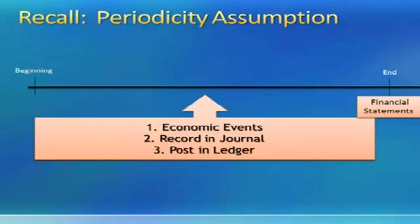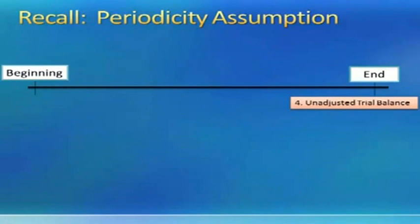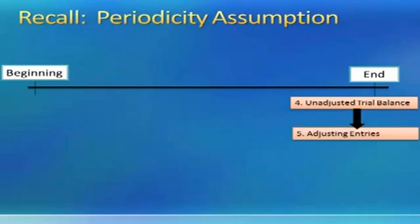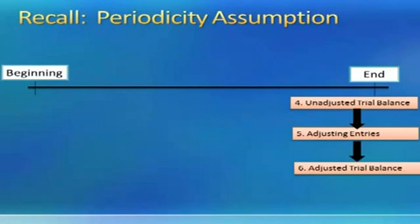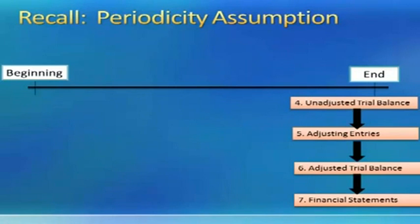At the end of the accounting period, we want to make financial statements. But before we can, there are some things we must do. The first thing is to prepare an unadjusted trial balance. After that, we prepare adjusting entries, which will be discussed in a future module. After adjusting entries, we prepare an adjusted trial balance. And then finally, after the adjusted trial balance, we can make our financial statements. Remember, the goal is always to provide information to decision makers, and financial statements are one piece of that information.